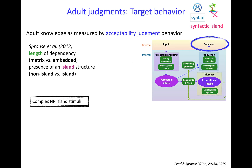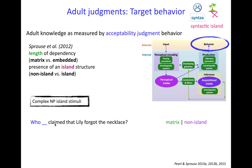Let's see what that looks like with a particular stimulus type — complex noun phrase, or complex NP, islands. Here we have an utterance: 'who claimed that Lily forgot the necklace.' We have 'who' and its gap in the matrix (main) clause, even though there's an embedded clause later in the sentence. So you have a matrix dependency and this is not an island structure — a non-island factor.